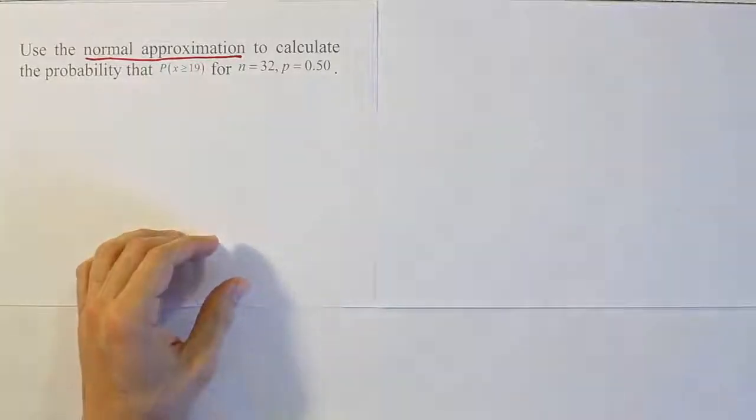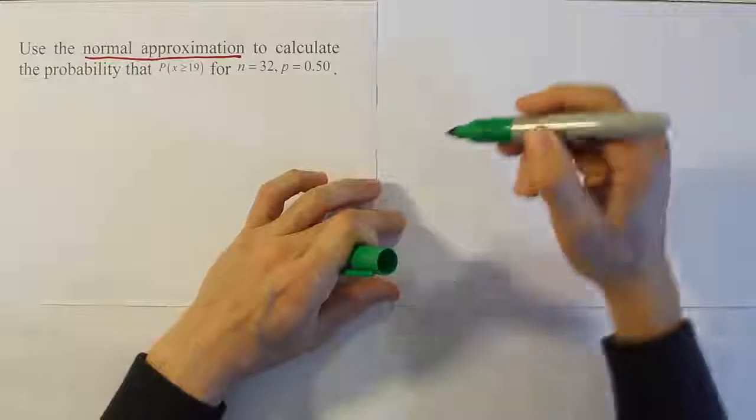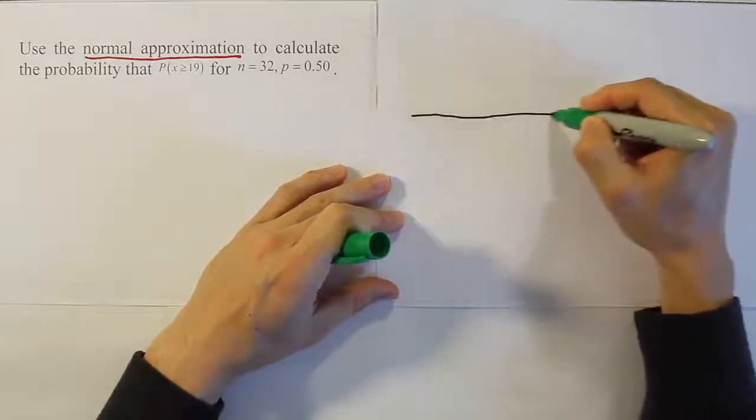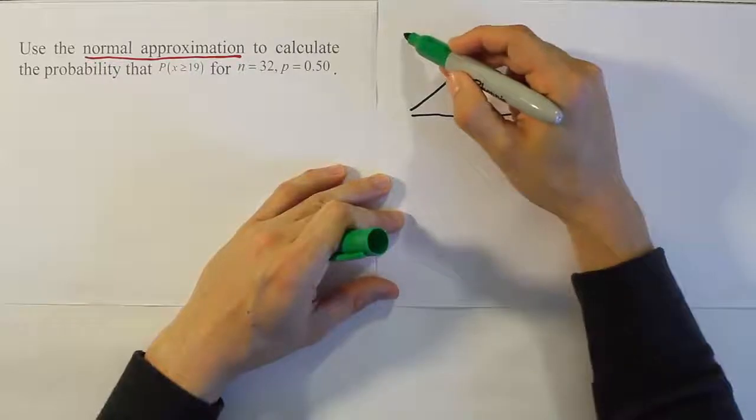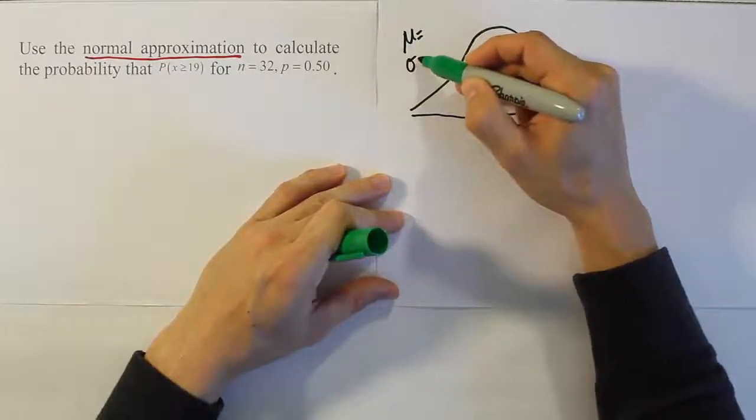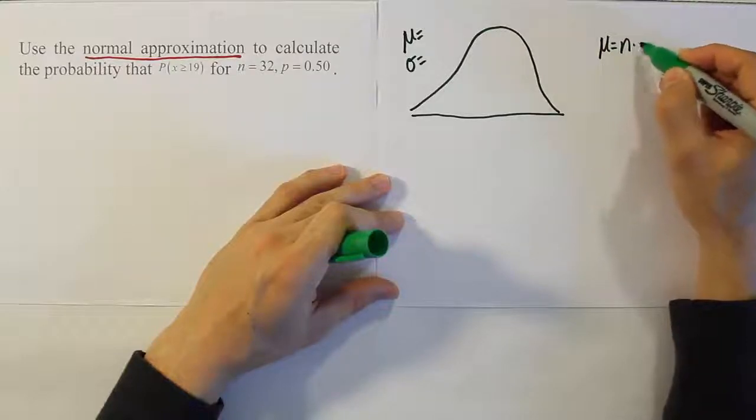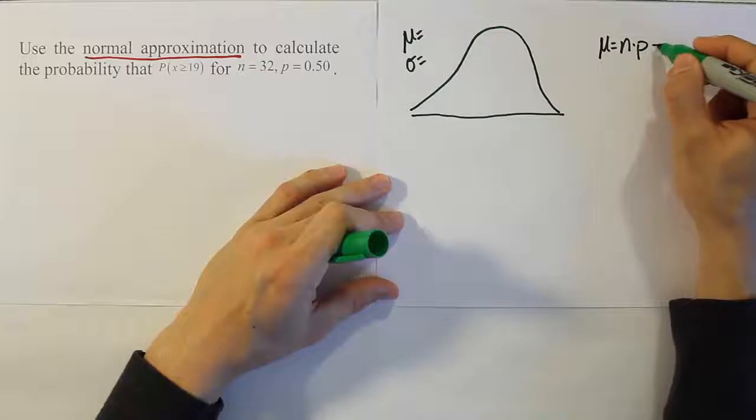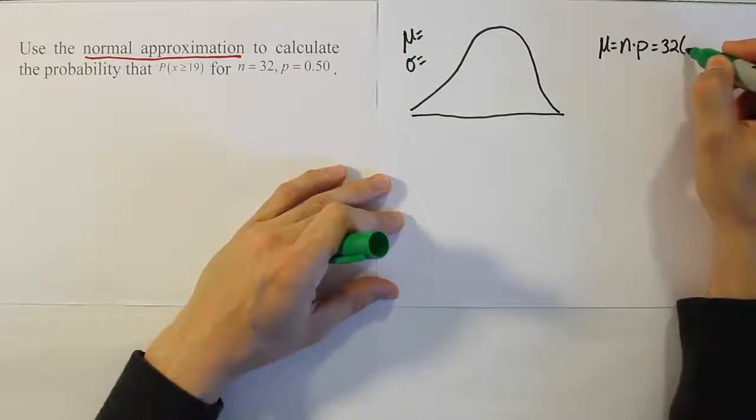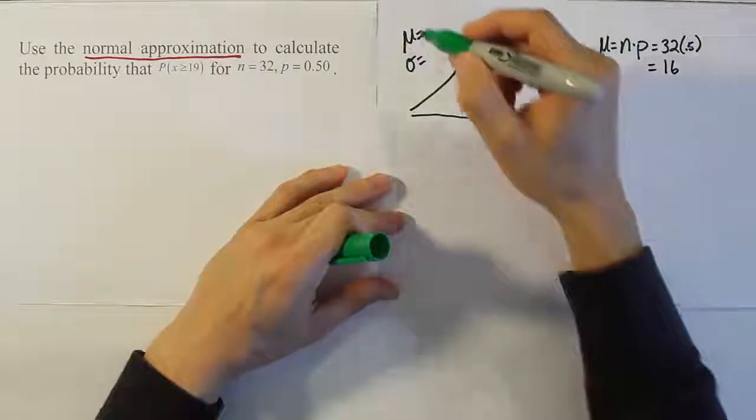First thing we need to do is draw the bell curve and label its mean and standard deviation. To calculate the mean we have to do n times p. So n is 32, the probability is 0.5, so that's half of 32. We'll get the answer 16 for the mean.